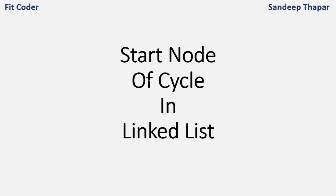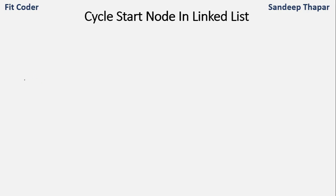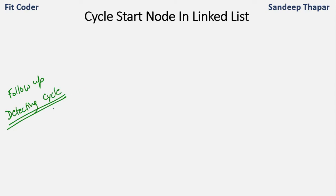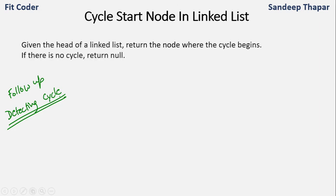Hi everyone. In this video we will discuss how to find the start node of a cycle in the linked list. This problem is usually asked as a follow-up for detecting a cycle in the linked list. I have made a separate video on how to detect a cycle — please watch that video before proceeding to this one. We are given the head of a linked list and we have to return the node where the cycle begins. If there is no cycle, return null.